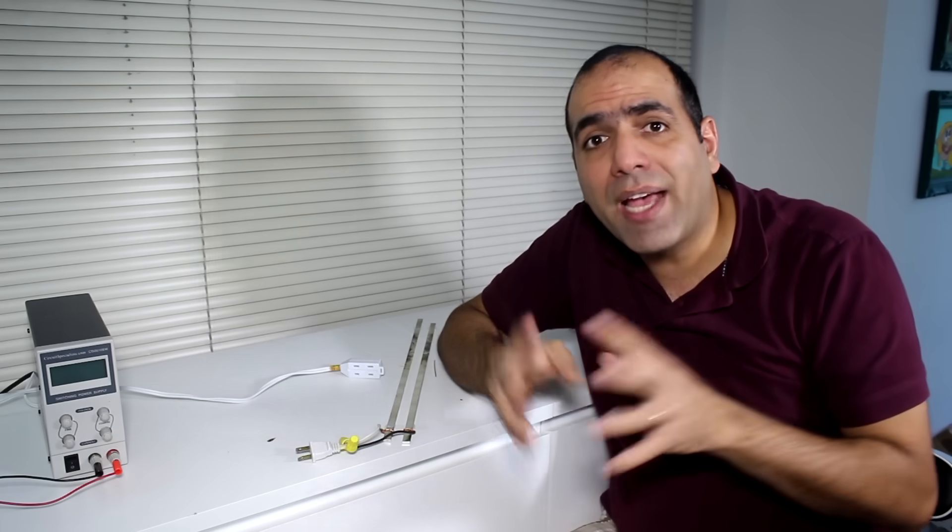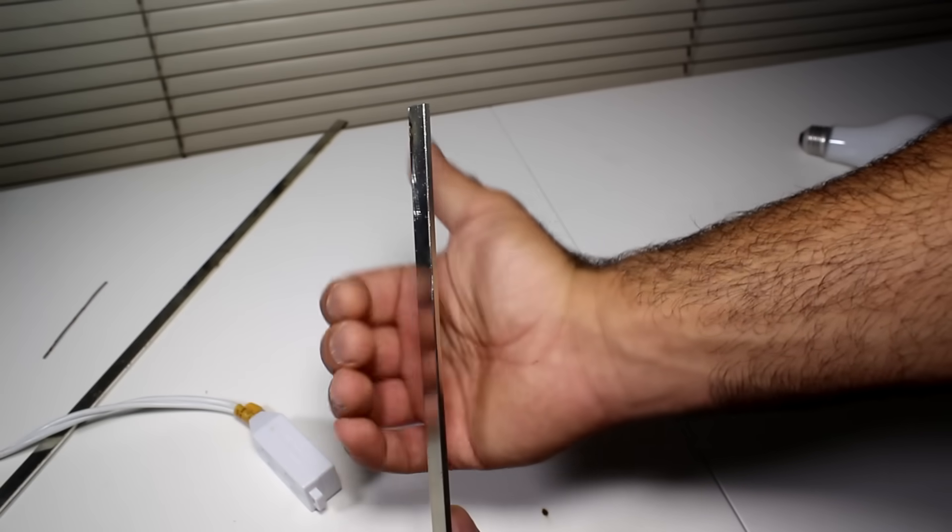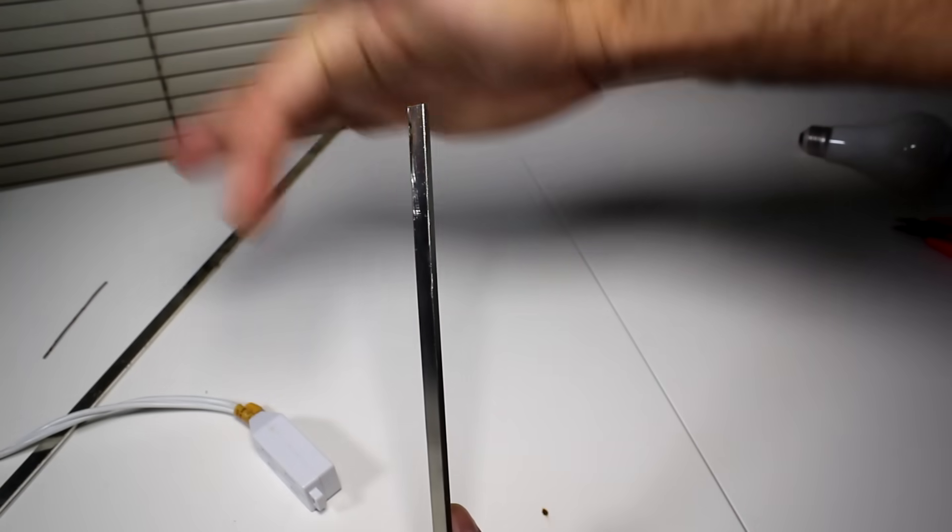To understand how it works, you need to know two right hand rules. The first one is quite simple. Using your right hand, if thumb shows the direction of current in the wire, other fingers show the direction of magnetic field around the wire.